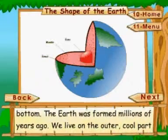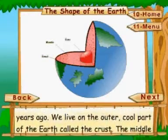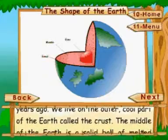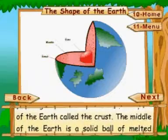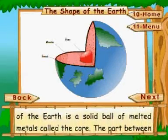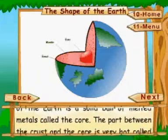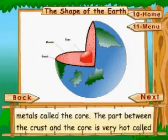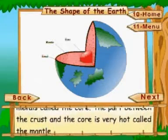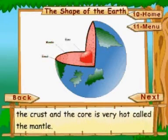We live on the outer cool part of the earth called the crust. The middle of the earth is a solid ball of melted metals called the core.